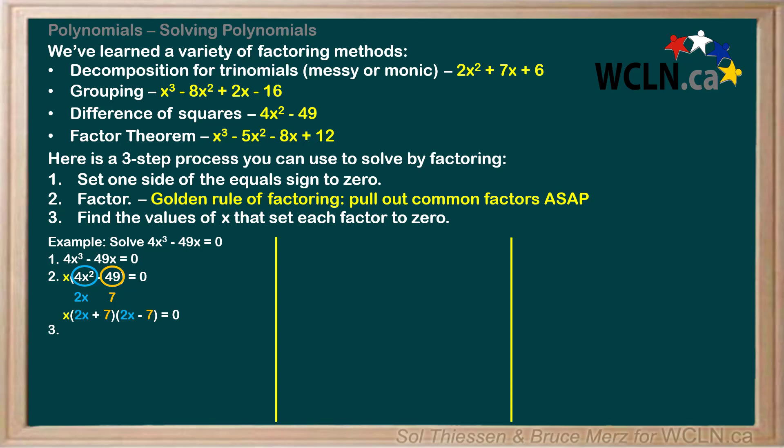Step 3 is to find the values of x that set each factor to 0. We can do so by writing each factor on its own equal to 0 and then isolating x in each case. Let's start with the factor of x. X is already isolated, so x = 0 is one solution to our equation.